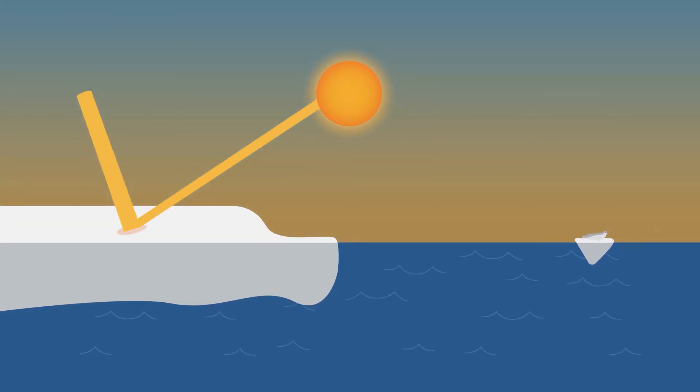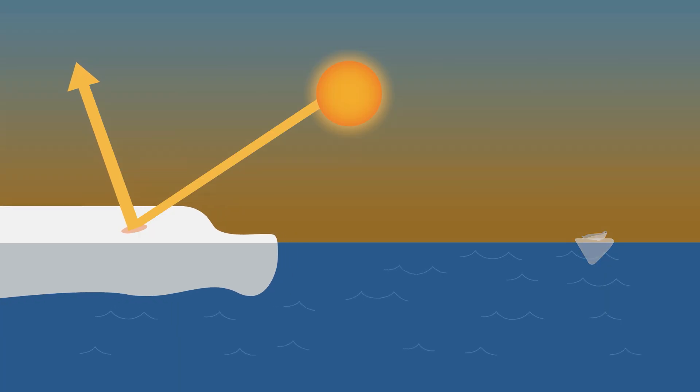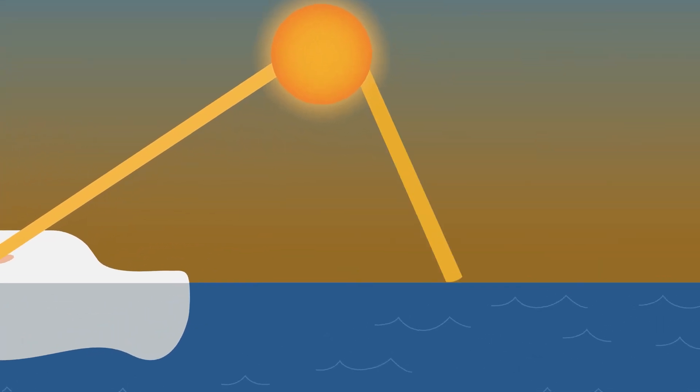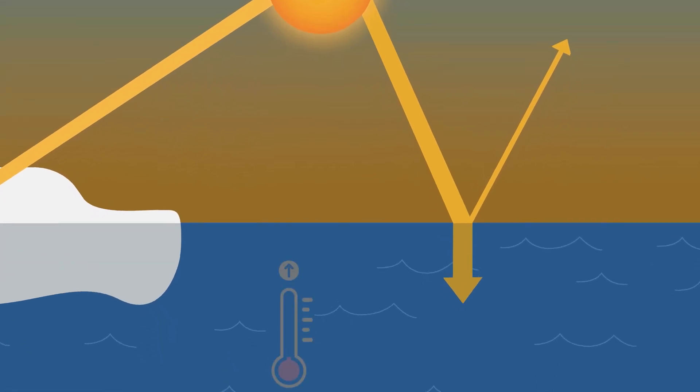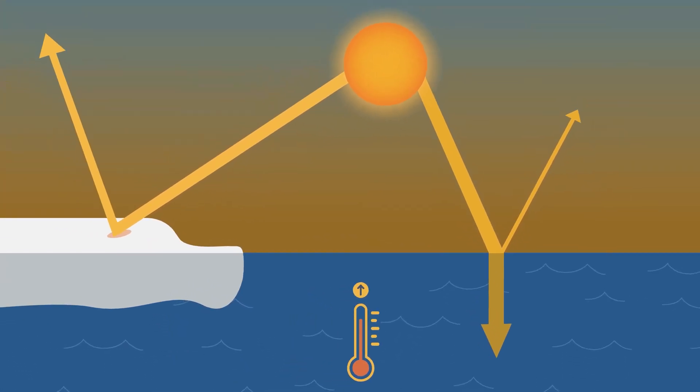Warmer temperatures cause sea ice to melt, which means the ocean's reflectivity changes as the surface is transformed from a bright ice surface to dark open ocean waters. This causes the ocean to absorb more heat than it reflects, which results in warmer temperatures that lead to more melted sea ice.